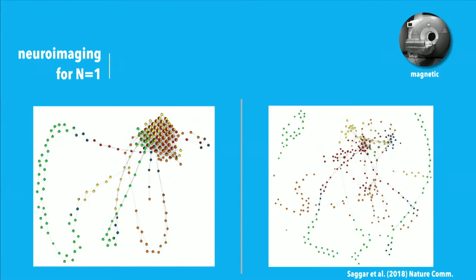Things get very interesting when you take the same shape graphs from two different people. One was a very poor performer — barely 70% accuracy — and the other was at 98% accuracy. Looking closely at the shape graphs, the person on the right has red dots connecting preferentially to other red dots, whereas the person on the left has more of a pie chart pattern — regardless of which task they're doing, their brain activation map looks very similar. The better performer uses very specific task-specific networks for each task.